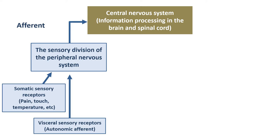Then we have the ones we're a bit more aware of. The somatic sensory receptors are the receptors throughout the body that detect things like pain, touch, pressure, temperature - the things that we generally are more aware of. They're constantly detecting things like that and then send action potentials in via the sensory division.